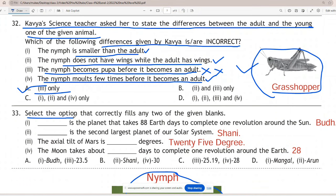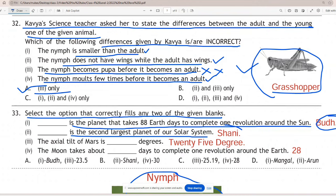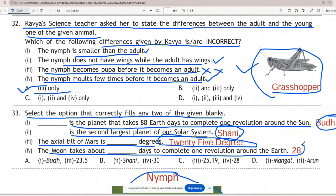Question 33: Select the option that correctly fills any two of the given blanks. First, which is the planet that takes 88 earth days to complete one revolution around the sun? The answer is Mercury. Second, what is the second largest planet of our solar system? Saturn. Third, the axial tilt of Mars is 25 degrees. Fourth, the moon takes about 28 days to complete one revolution around the earth. So the correct answer is C - third and fourth given answers are correct.